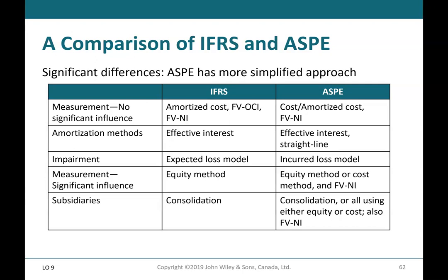Comparison of IFRS and ASPE — significant differences: ASPE has a more simplified approach. For measurement with no significant influence, IFRS allows amortized cost, fair value through OCI, and fair value through net income; under ASPE, the same options apply except there is no concept of fair value through OCI. For amortization methods, both IFRS and ASPE allow the effective interest rate method; ASPE also allows the straight-line method for simplicity. For impairment, IFRS uses the expected loss model and ASPE uses the incurred loss model. For measurement with significant influence, both IFRS and ASPE allow the equity method; ASPE can also use the cost method or fair value through net income. For subsidiaries, both allow consolidation; ASPE additionally allows equity, cost, or fair value through net income for simplicity.